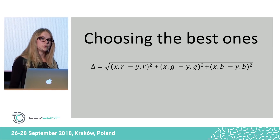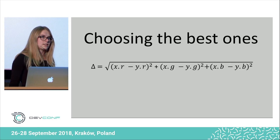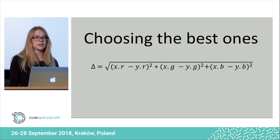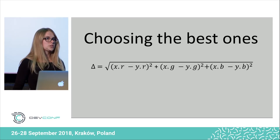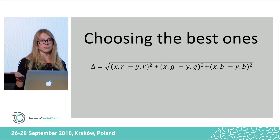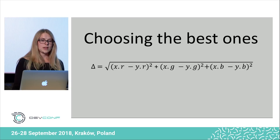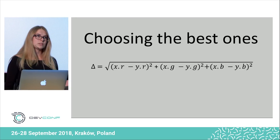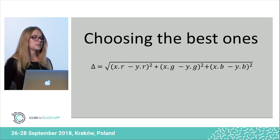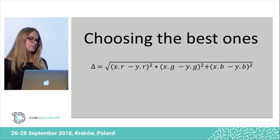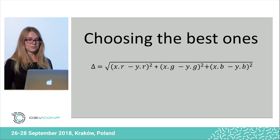And how can we do it? We can measure the distance between a pixel in the source image and the current image using this formula, and sum it for all the pixels — where X stands for the source image, Y for the current image, and RGB is just red, green, and blue.